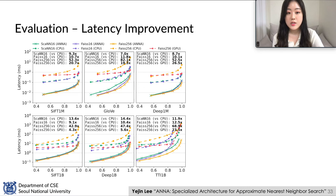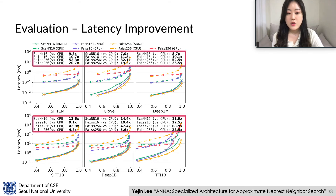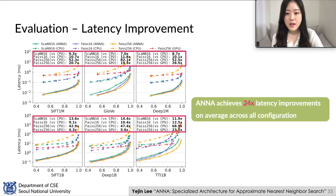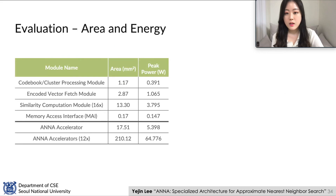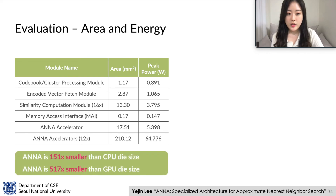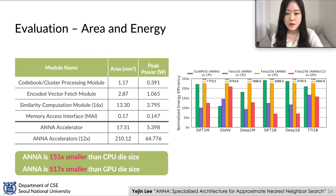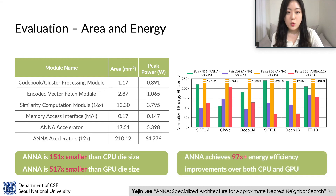ANA achieves high recall at sub-millisecond latency in billion-scale datasets, with over 24 times latency improvement across all configurations. ANA is 151 times smaller than CPU die size and 517 times smaller than GPU die size. ANA achieves orders of magnitude energy efficiency improvements over both CPU and GPU implementations.